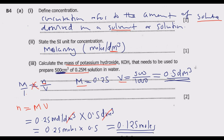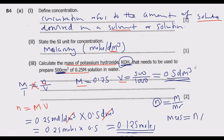Now that we know the number of moles, we can find the mass. We use the formula: number of moles = mass / relative molecular mass (RMM). Therefore, mass = moles × RMM. We need to find the RMM of potassium hydroxide (KOH) using the periodic table.